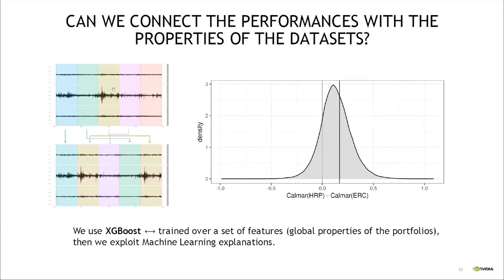We took a multi-asset dataset of 20 years of futures and created around 100,000 block bootstrap samples — random drawing with repetition using blocks. Some blocks appear twice; some never occur. This allows generating simple scenarios with the same distributions as the original data. Because we use blocks, we maintain the correlation properties among the assets, which is important. We then measured the performance of hierarchical risk parity and equal risk contribution across these 100,000 datasets.